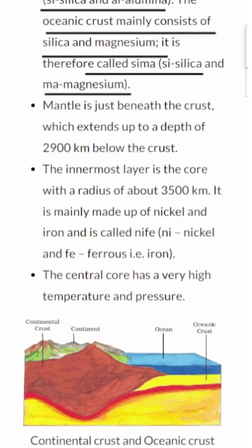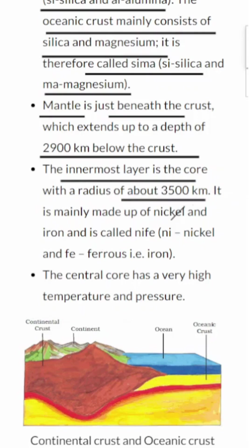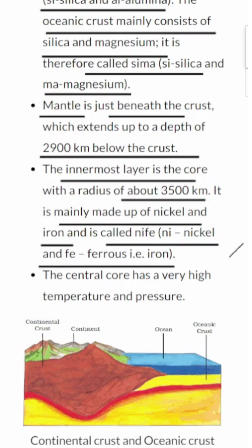Now, let's dig deeper into the Earth. Just below the crust, we have the mantle, extending down to about 2,900 km beneath the Earth's surface. And finally, we reach the innermost layer — the Earth's core. This core is about 3,500 km in radius and is primarily made up of nickel and iron. It's so special that scientists call it NiFe — NI for nickel and FE for ferrous, which means iron.